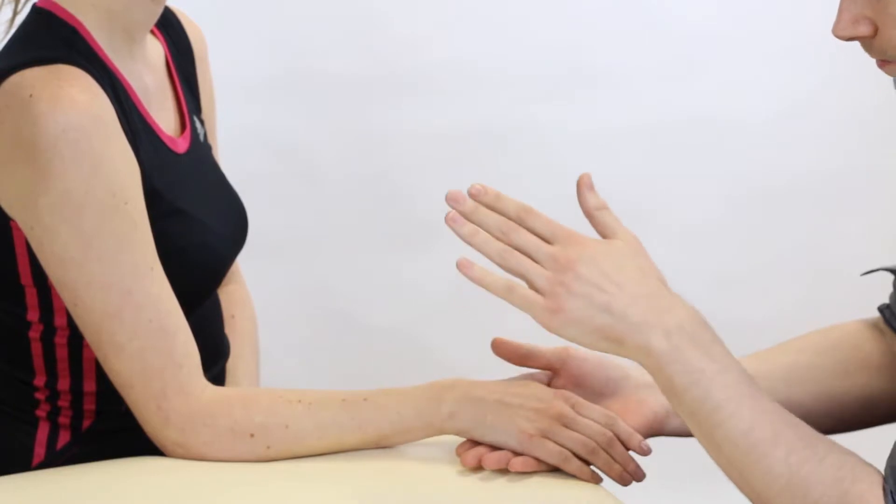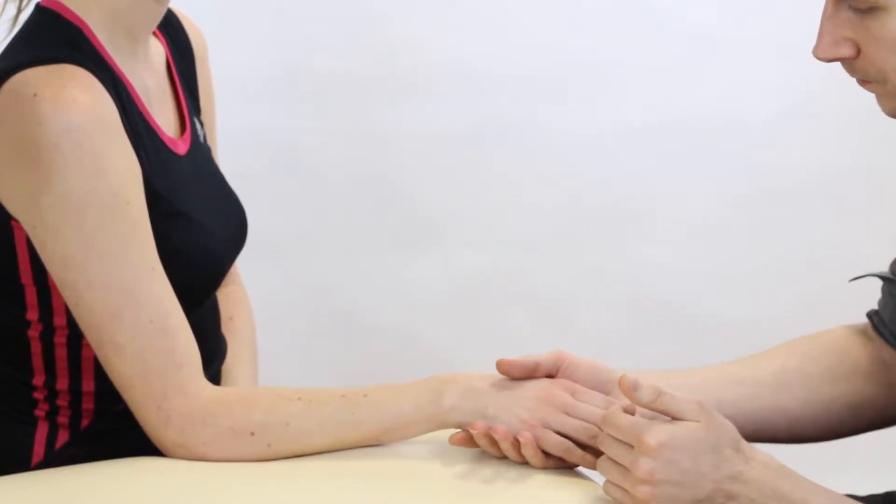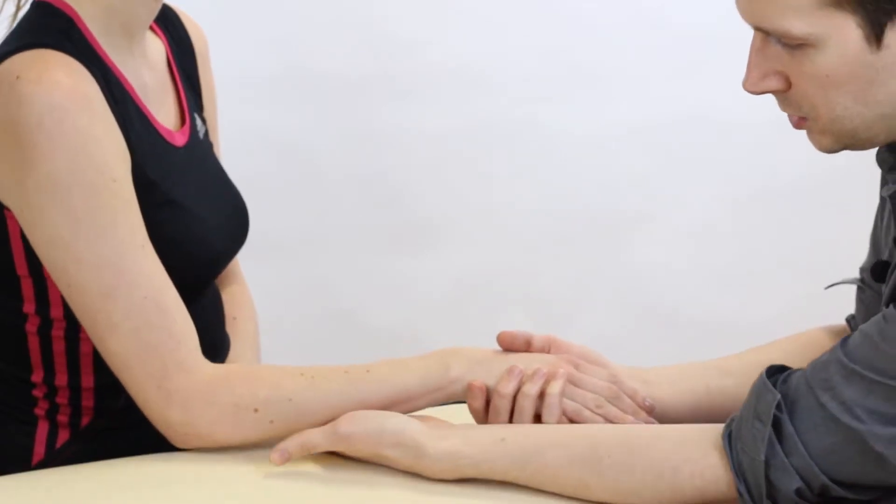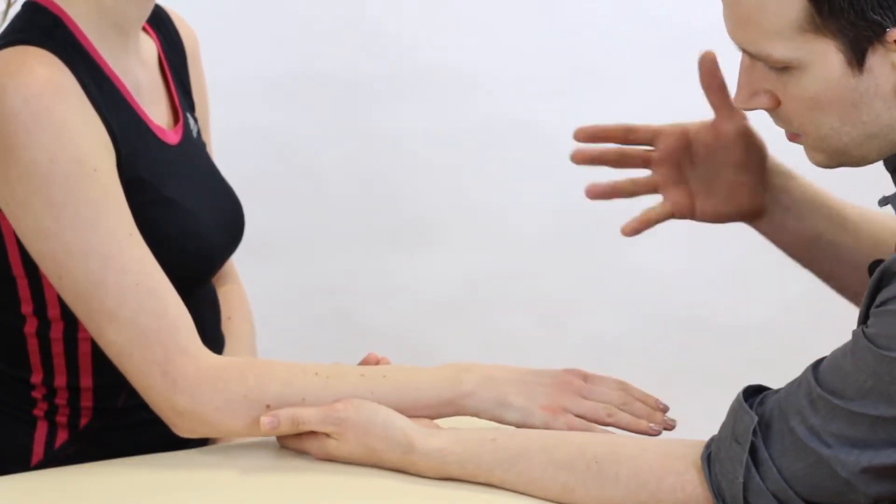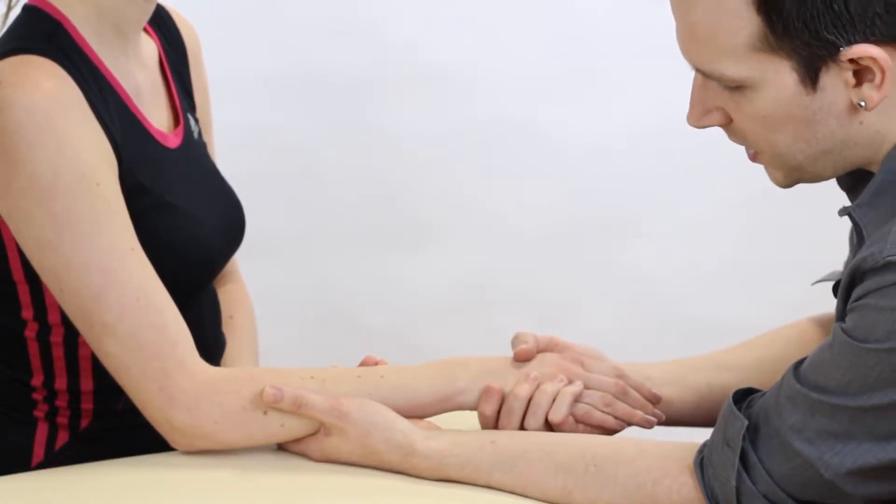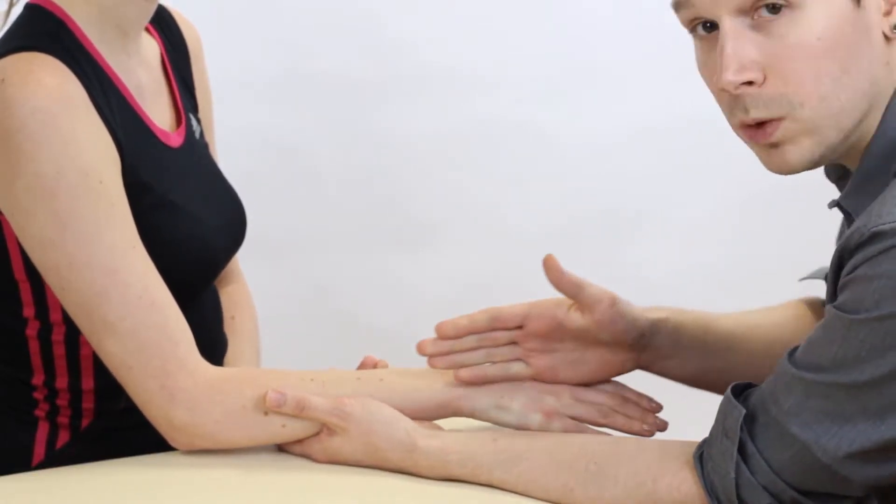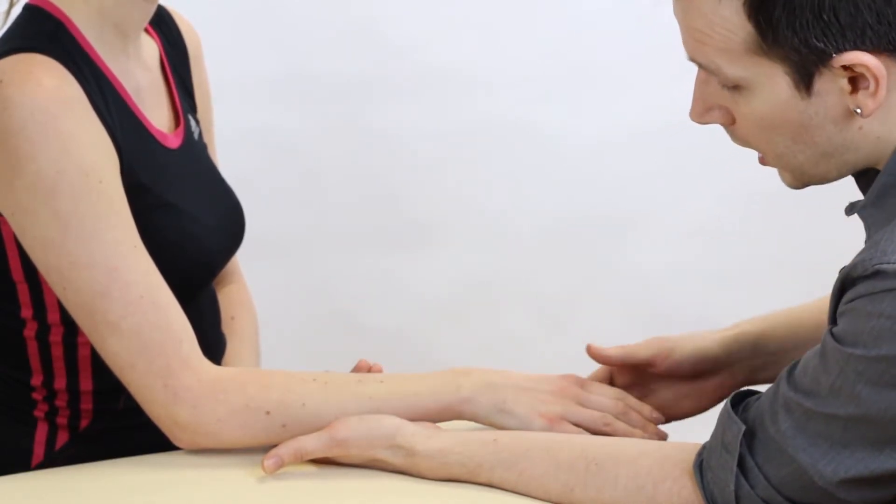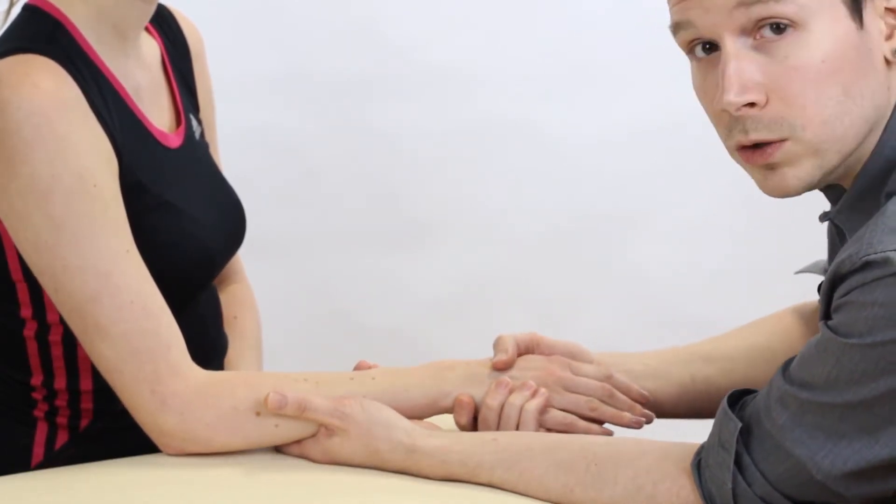We're going to start with the wrist in a pronated position, and what we're going to do from here is have one hand supporting under the forearm and the other hand is going to swoop under like a handshake position. From here we apply an axial load through the ulnar bone and then we ulnar deviate.